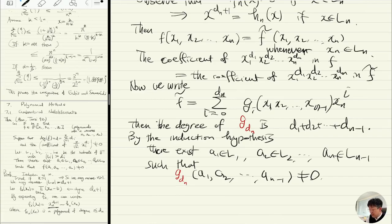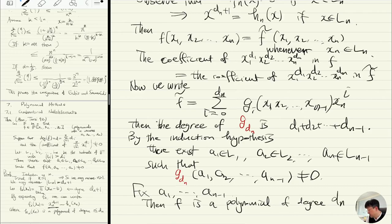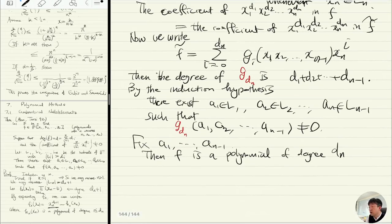What does that mean? Let's fix a1 up to an-1. Then f-tilde is a polynomial of degree dn.